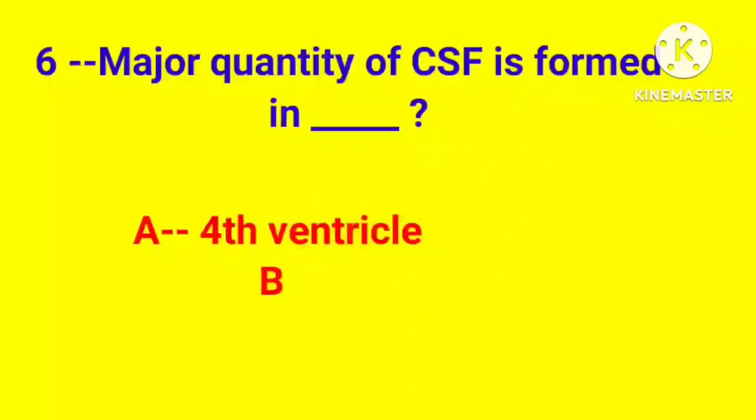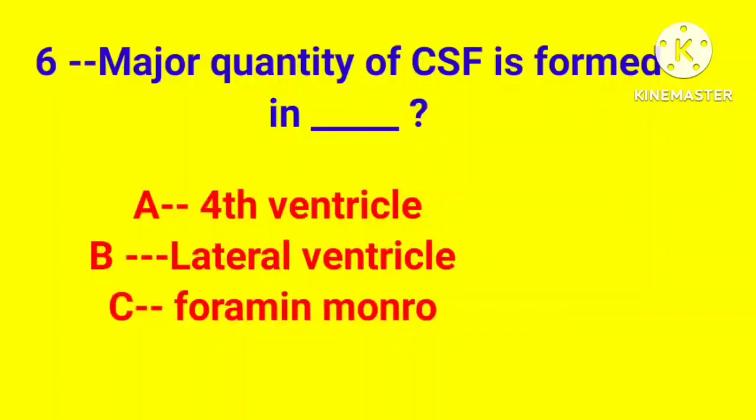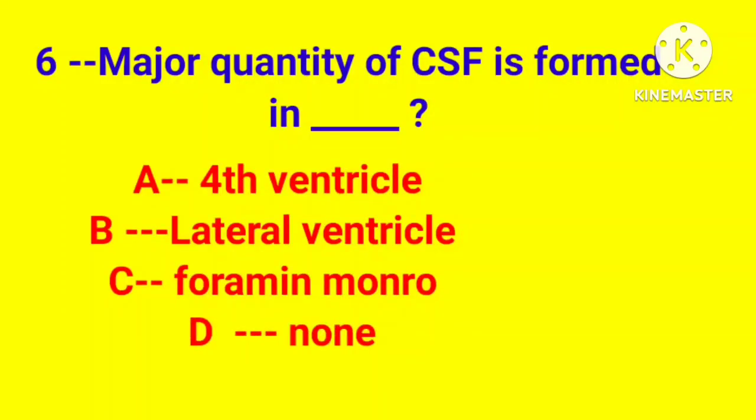Question number 6. Major quantity of CSF is formed in. Option A, fourth ventricle. Option B, lateral ventricle. Option C, foramen Monroe. Option D, none. Correct answer is option B.